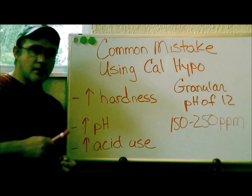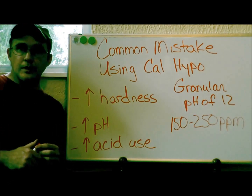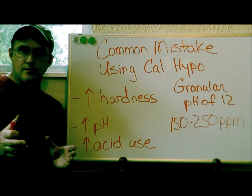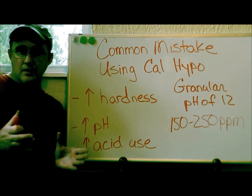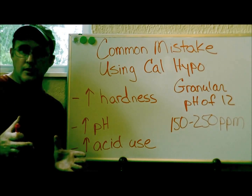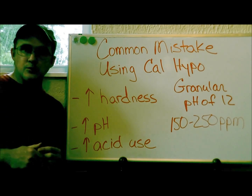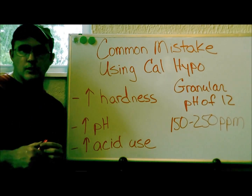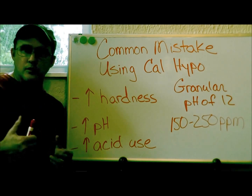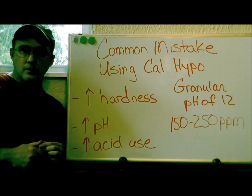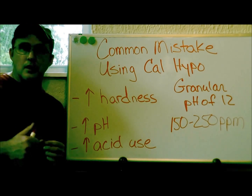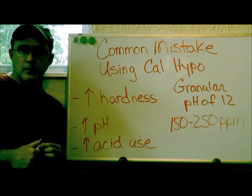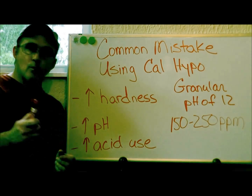That is going to increase your pH. Now if you're trying to keep your pH between 7.4 to 7.8 — which you should — and you're fighting a high pH problem, this could be the issue. If you're using granular chlorine, go ahead and switch to liquid chlorine, sodium hypochlorite.